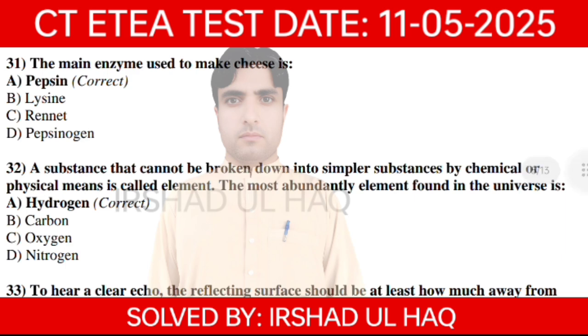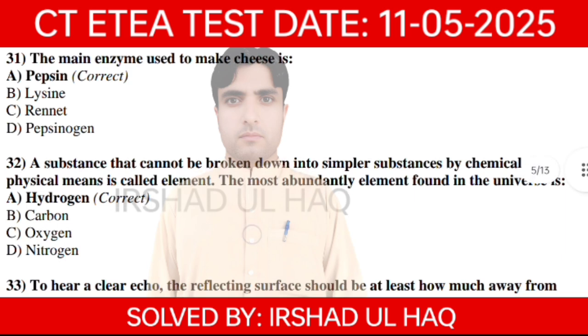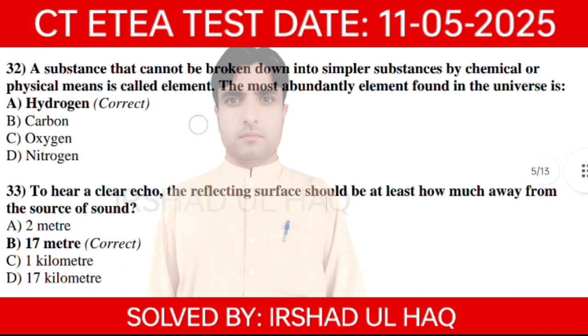A substance that cannot be broken down into simpler substances by chemical and physical means is called an element. The most abundant element found in the universe is Hydrogen. A is the correct option.